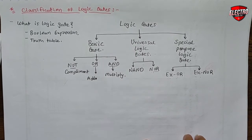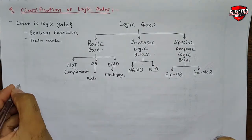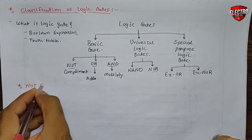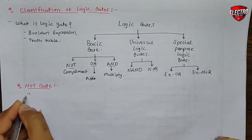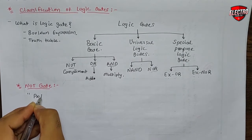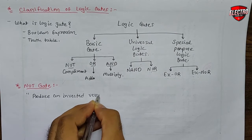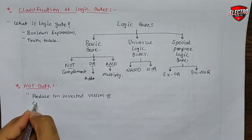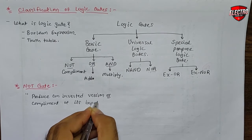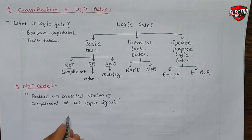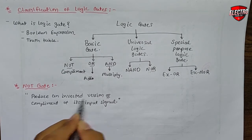In this video we will discuss basic logic gates in detail. Let's start with the NOT gate. The NOT gate is one type of basic gate, and its function is to produce an inverted version or complement of its input signal.